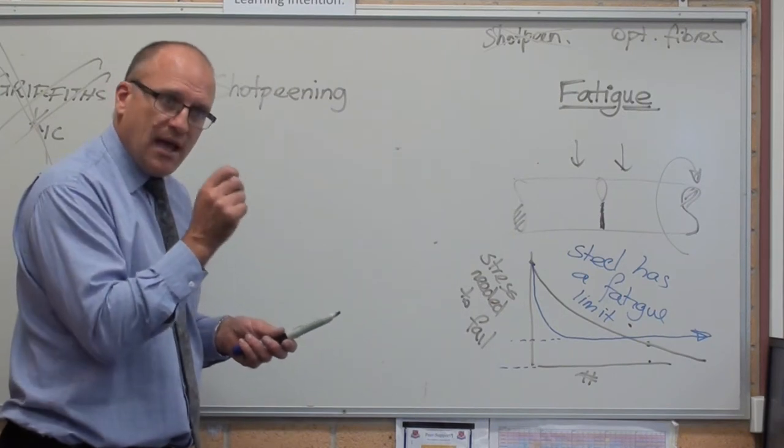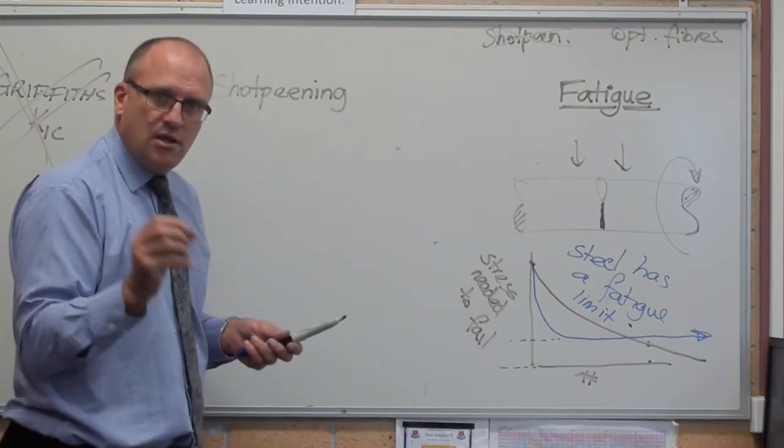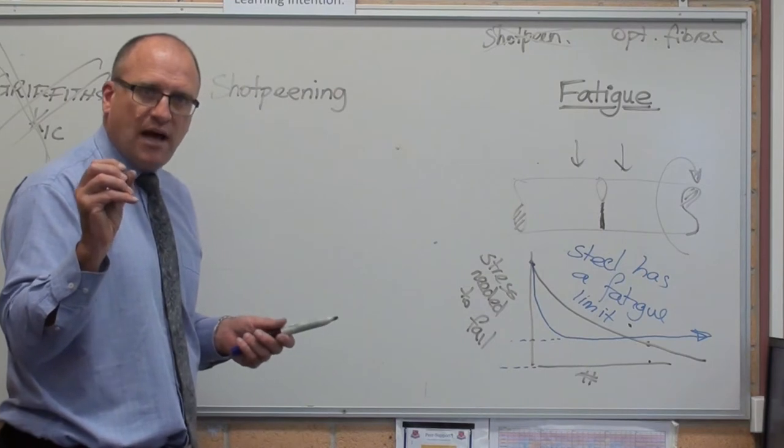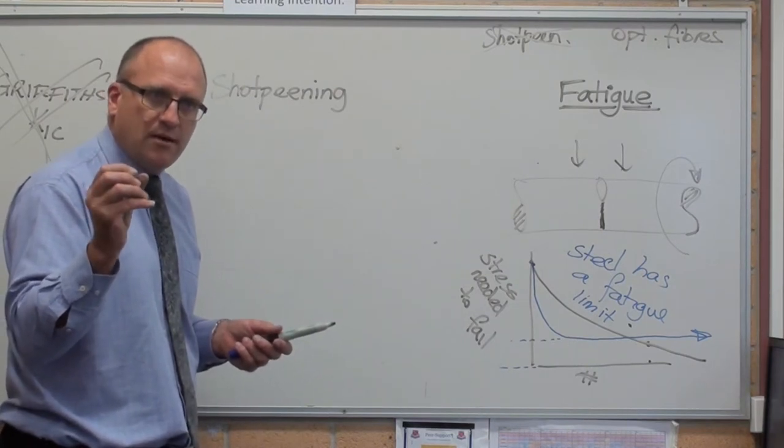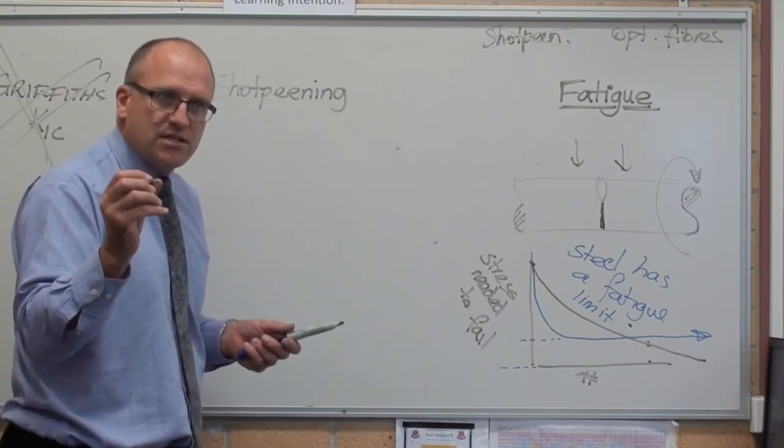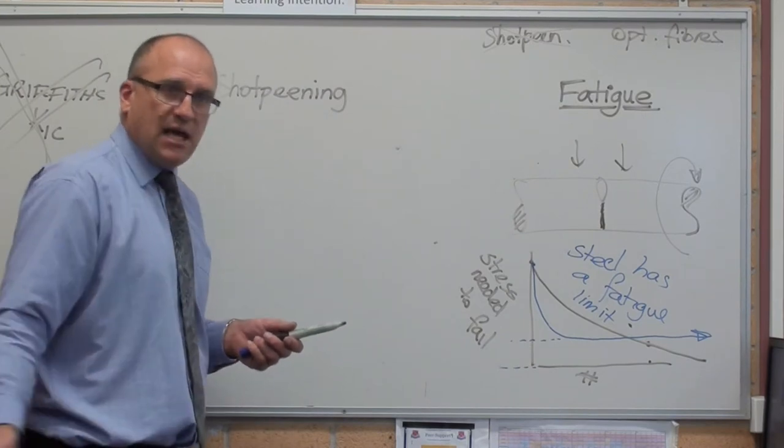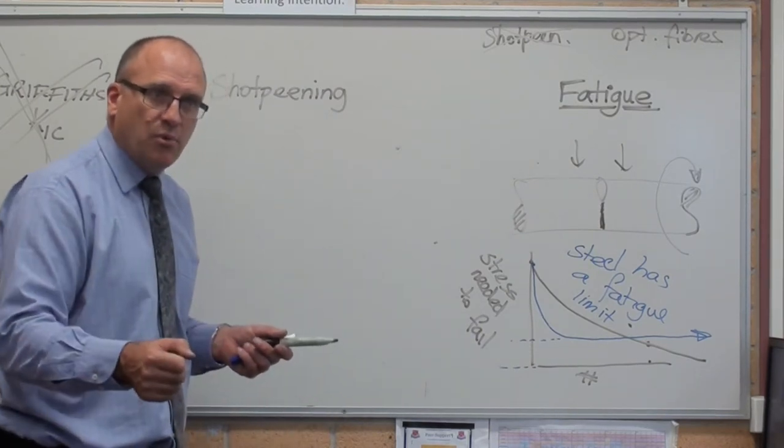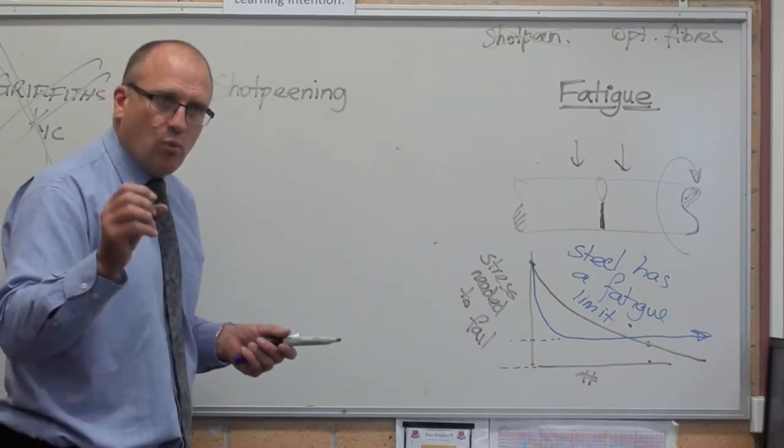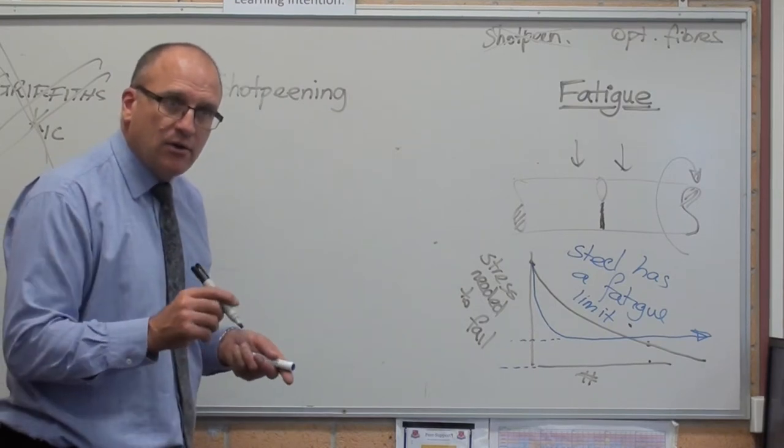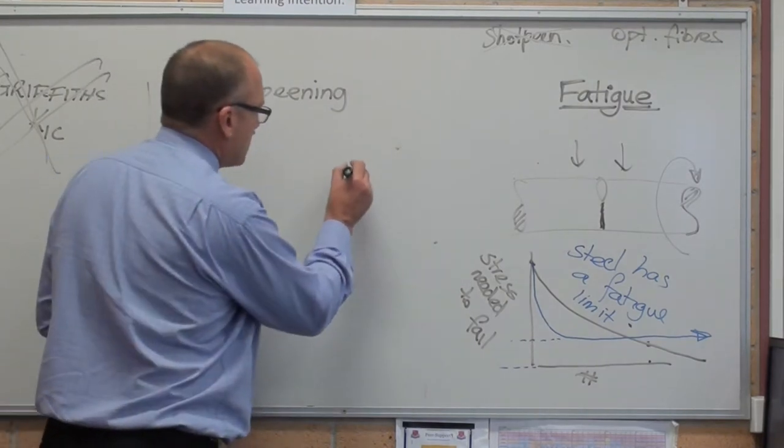Instead of just tapping it with a hammer a million times, you get round steel shot that's half a millimeter round, one millimeter round, and a compressed air gun, and just blast the surface with hardened steel balls that are about one millimeter, half a millimeter round. And what actually happens now,